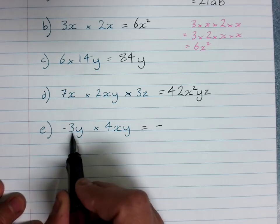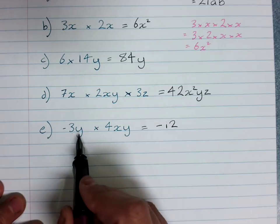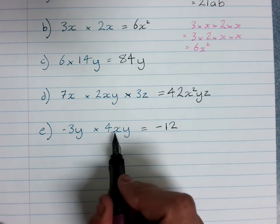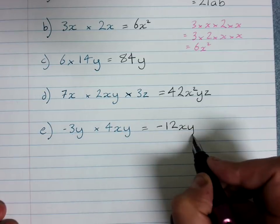Multiply the coefficients 3 times 4 is 12. Now we normally put our letters in alphabetical order if we can, so I'm going to start with my x and then y times y is y squared.